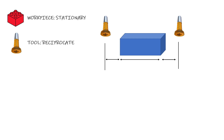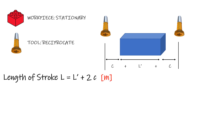Whenever we go for the machining process, we always keep some clearance. If we want to machine our workpiece for the length L-dash as shown in the figure, then before the L-dash length we take c as clearance, and after the workpiece also we take c as clearance. So the overall cutting stroke length L is equal to L-dash plus 2 times c, where length is in meters.